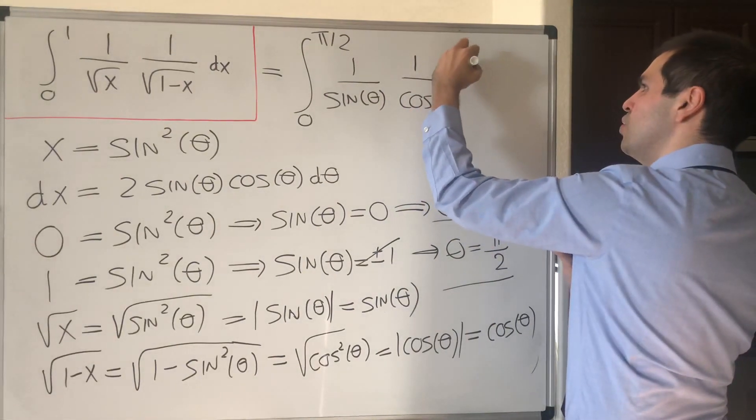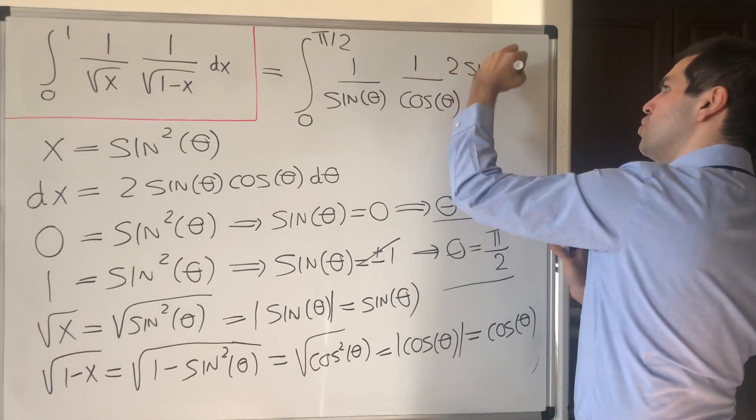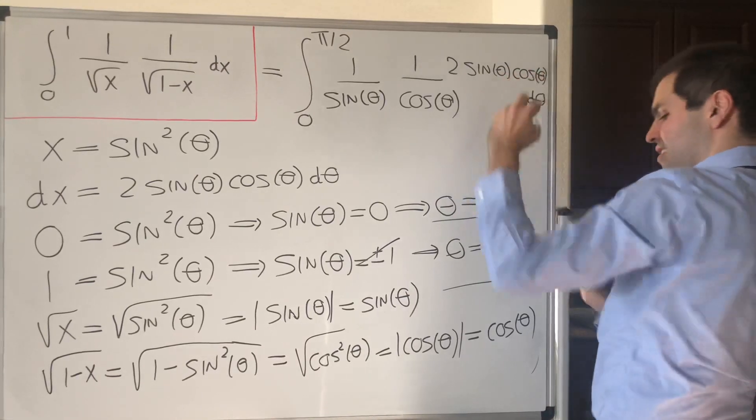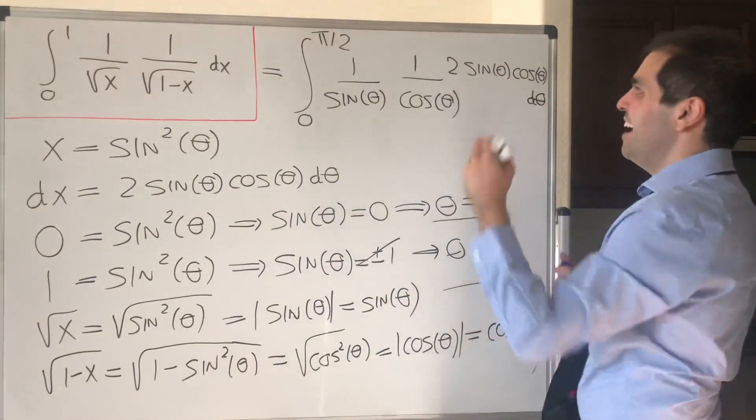And here's the nice thing, remember dx was 2 sine of theta cosine of theta d theta. And then what do we get?